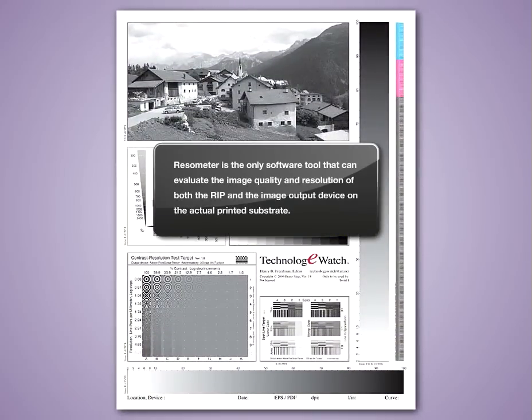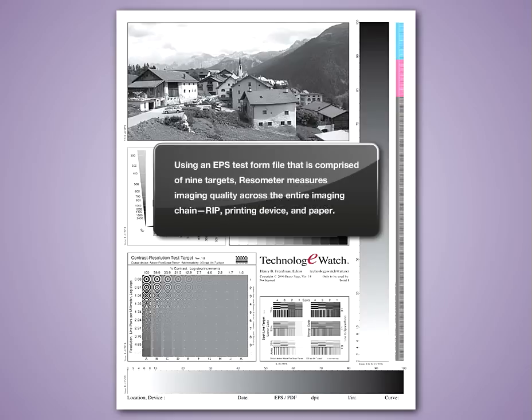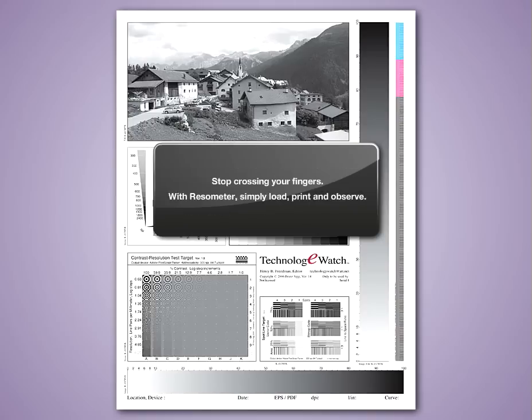Rhizometer is the only software tool that can evaluate the image quality and resolution of both the RIP and the image output device on the actual printed substrate. Using an EPS test form file comprised of nine targets, Rhizometer measures imaging quality across the entire imaging chain — RIP, printing device, and paper. Stop crossing your fingers. With Rhizometer, simply load, print, and observe.